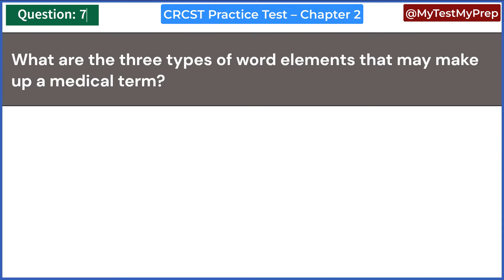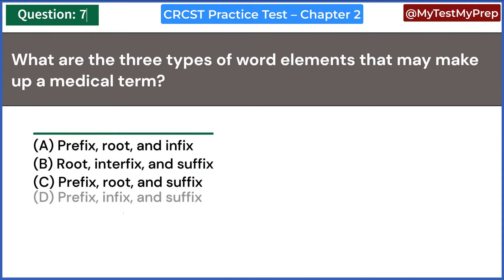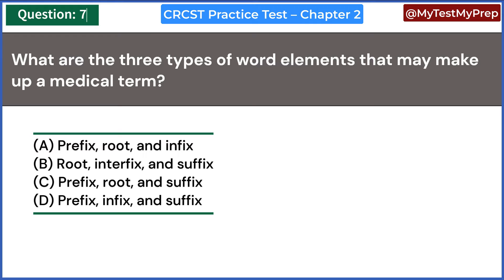What are the three types of word elements that may make up a medical term? A. Prefix, root, and infix. B. Root, interfix, and suffix. C. Prefix, root, and suffix. D. Prefix, infix, and suffix. Answer: C. Prefix, root, and suffix.